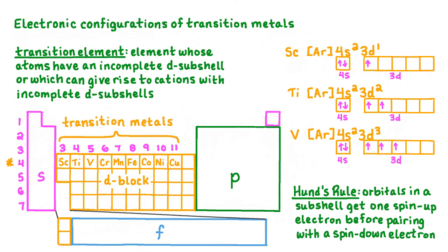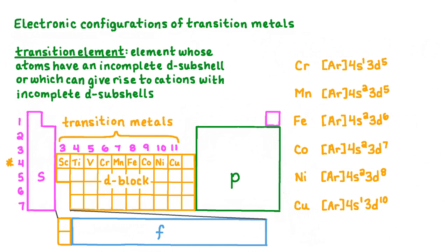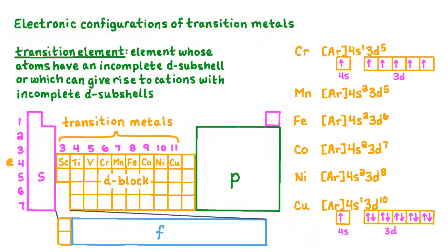Now we're ready to look at the electron configurations for the remaining transition metals in period 4. In each successive electron configuration, we would expect to see one more electron present in the D subshell. However, in the electron configurations of chromium and copper, the D subshell contains one more electron than we would expect. By closely inspecting the electron configurations and orbital diagrams of chromium and copper, we see that the 4s subshell only contains one electron instead of two. The result is that in chromium, the 4s and 3d subshells are each exactly half full, and in copper, the 4s subshell is half full and the 3d subshell is completely full. It is important to identify chromium and copper as transition metals in period 4 that are exceptions to the rules of writing electron configurations.